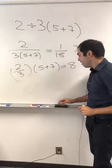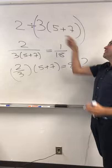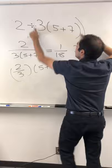The answer is neither and both at the same time. It all depends on your parentheses. If you put 2 divided by 3 times 5 plus 7, then it is the first answer.